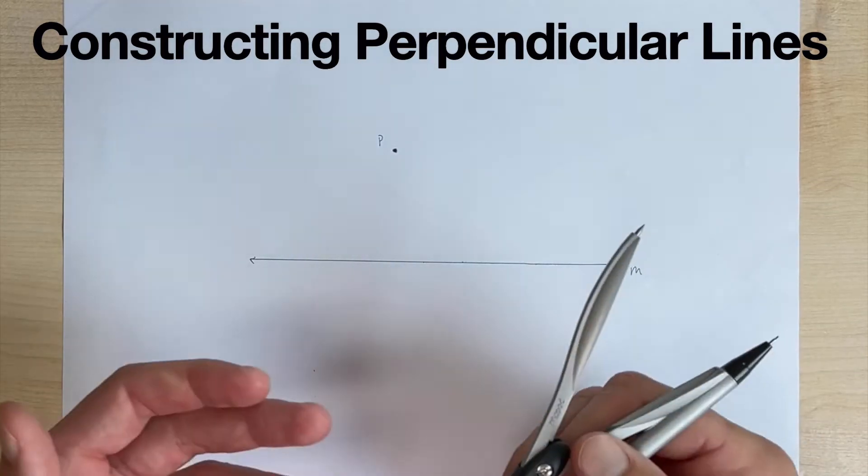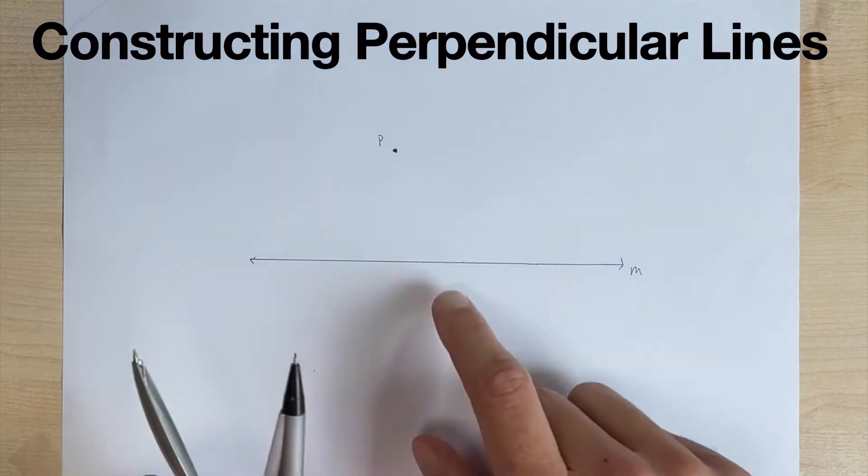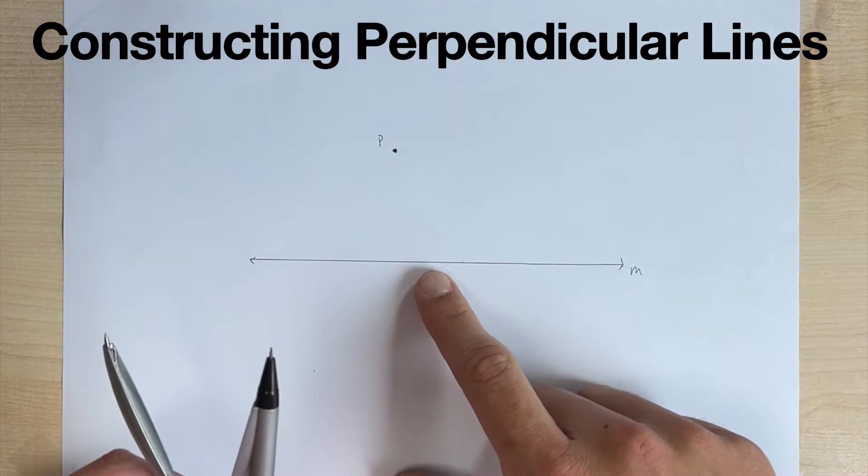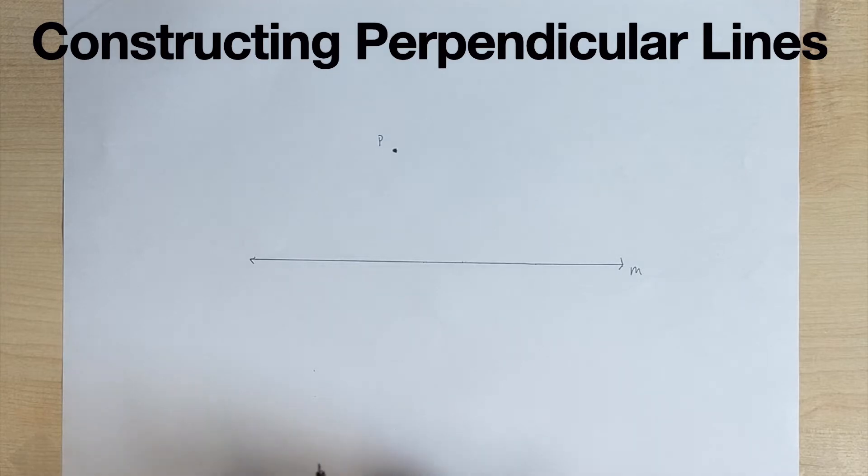So we're not necessarily worried about if our perpendicular line goes through the middle of line M, because once again, this is not a bisector. This is simply just a perpendicular line. I'll link the video to the perpendicular bisector below.